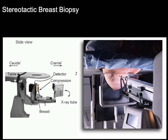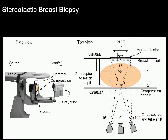Another mammography application is stereotactic breast biopsy. The patient's breast is placed under compression. A typical mammogram obtains an image with the x-ray tube in line with the detector, but in stereotactic breast biopsy, two images are required to create a stereo pair — one at plus 15 degrees and another at minus 15 degrees. By lining up the object in both images, we can use geometry to determine the depth of the lesion within the breast, which is used to guide the needle during biopsy.